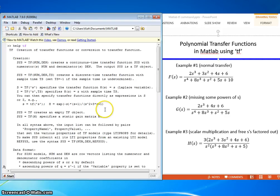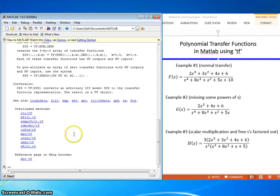I have three examples here, we'll go through all one by one. We'll start with example one which is a normal transfer function where the polynomial has all the coefficients.